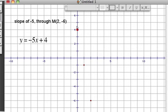Now we have a line that goes through the point, the y-intercept is 4, and the slope is negative 5, so the equation is y equals negative 5x plus 4.